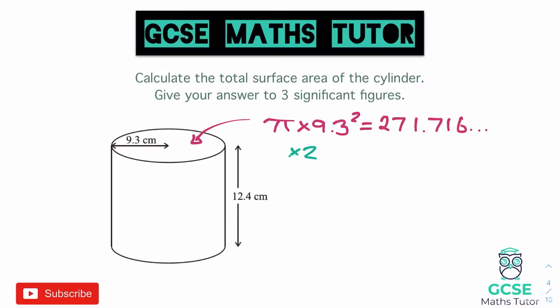I'm going to do times 2 on my calculator straight away. Writing down the full answer from the calculator: 543.4326972. That is the total surface area of the two circles.